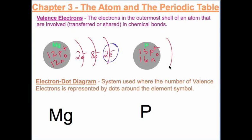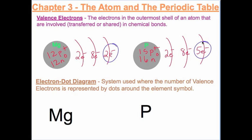Phosphorus has 15 protons, which means it has 15 electrons — two in the first shell, eight in the second shell, and five in the third shell. The valence electrons are the electrons in the outermost shell: these five.